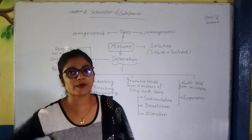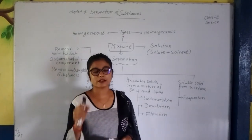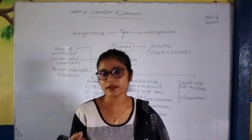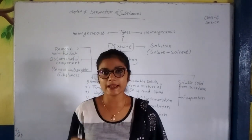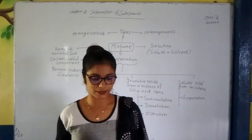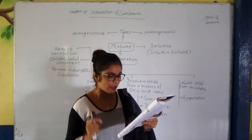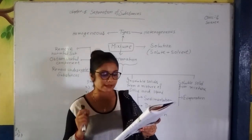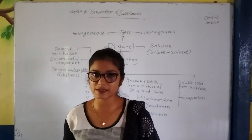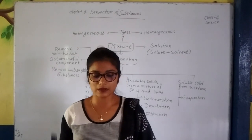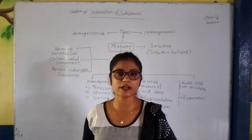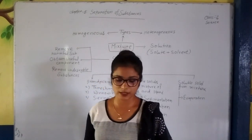Homogeneous means, for example, when salt dissolves in water, you cannot find the salt molecules in the water because it is completely diluted in the water. Heterogeneous means, for example, sand and stones form a heterogeneous mixture — we can easily recognize what is the sand and what is the stones.